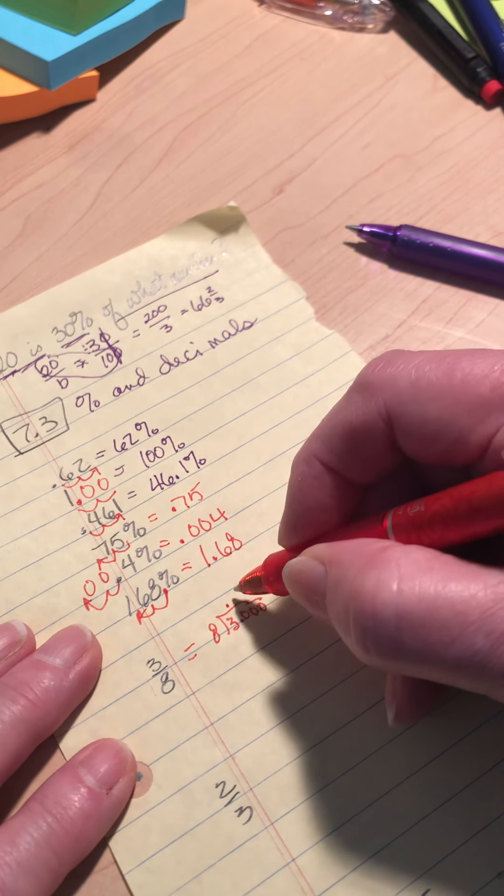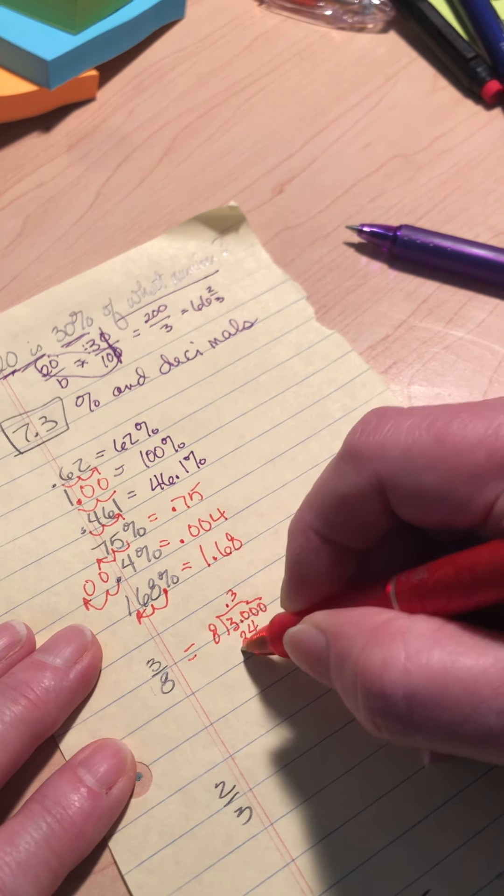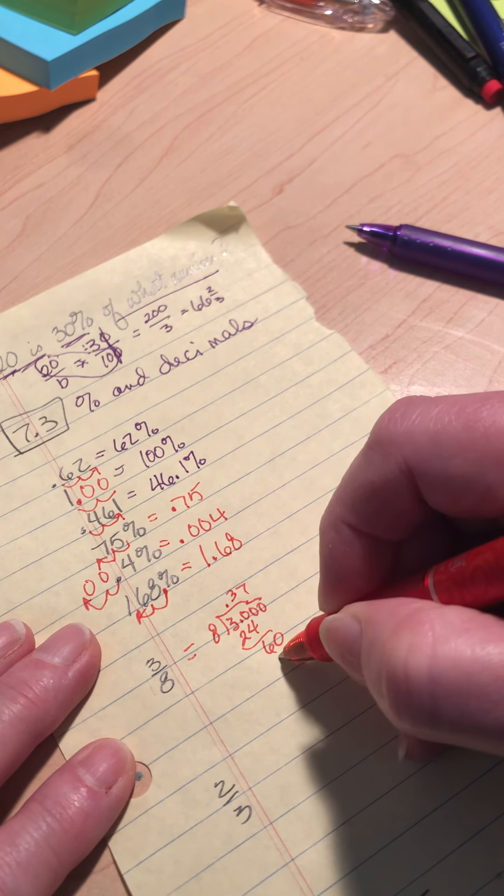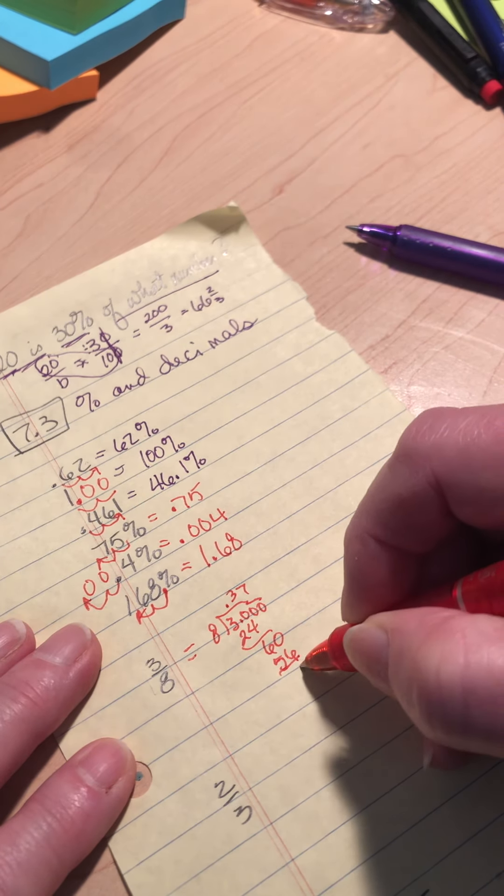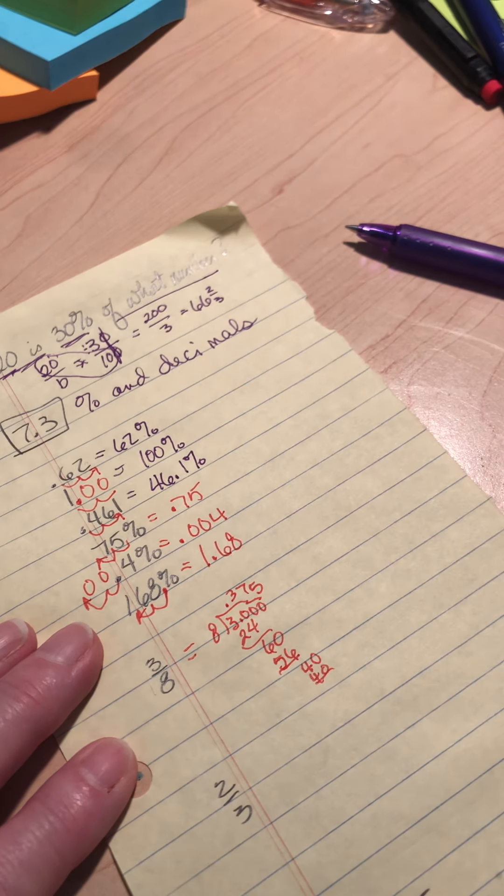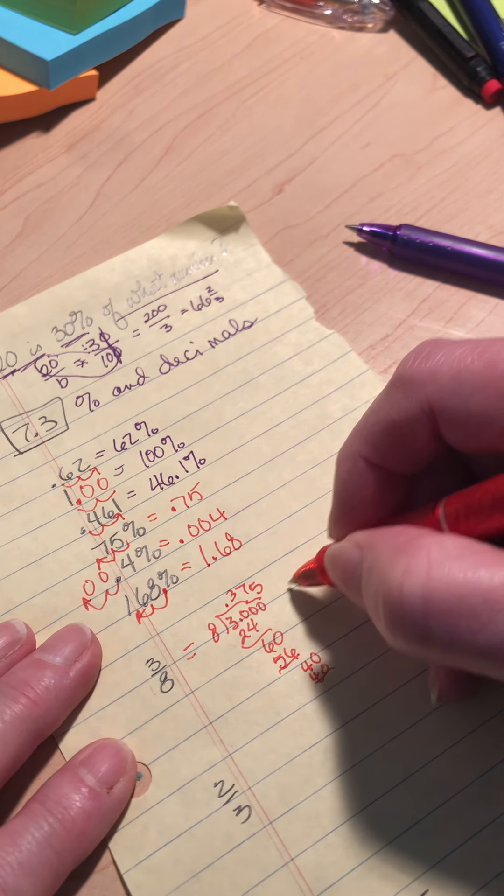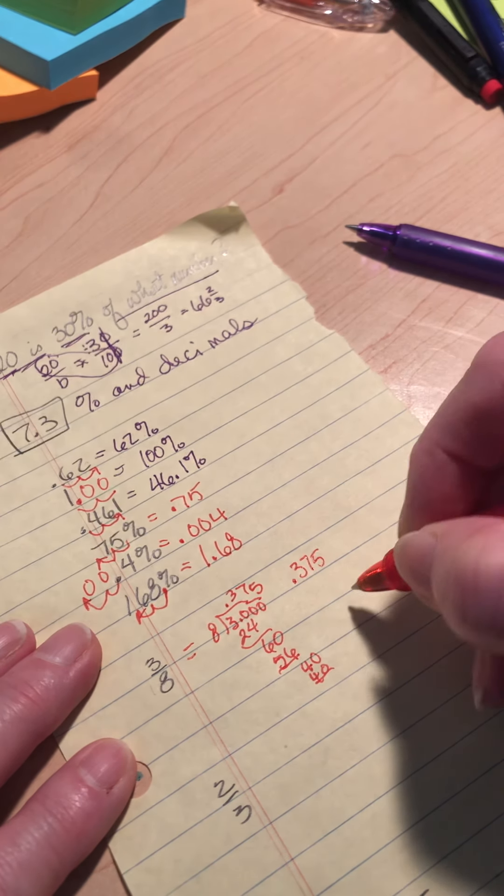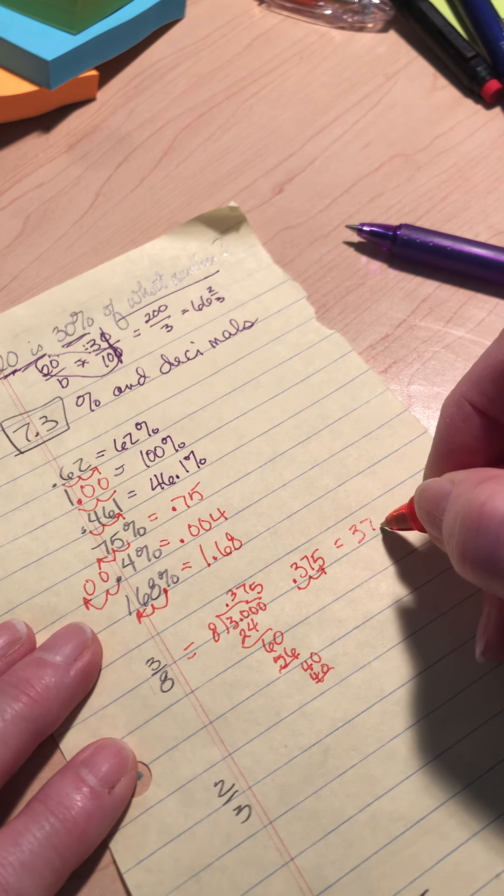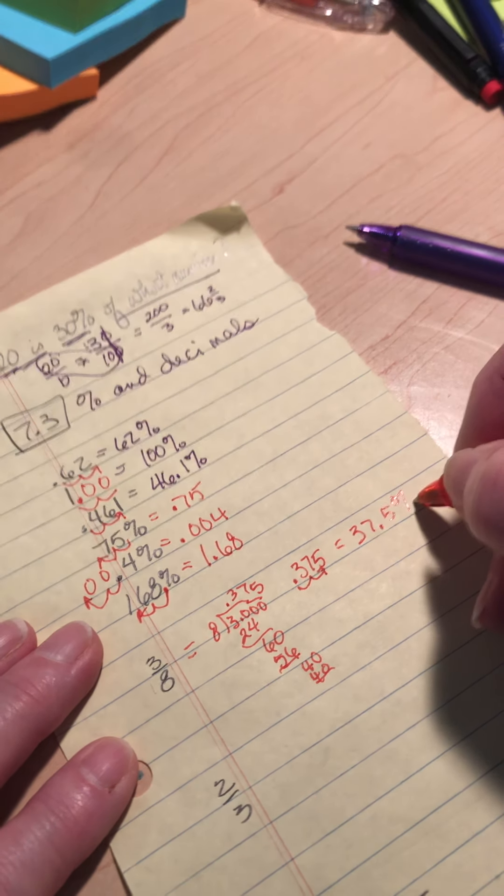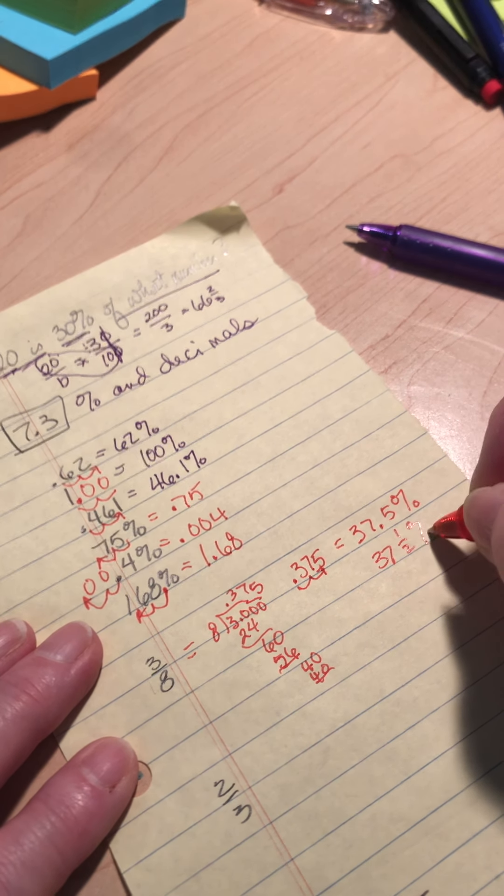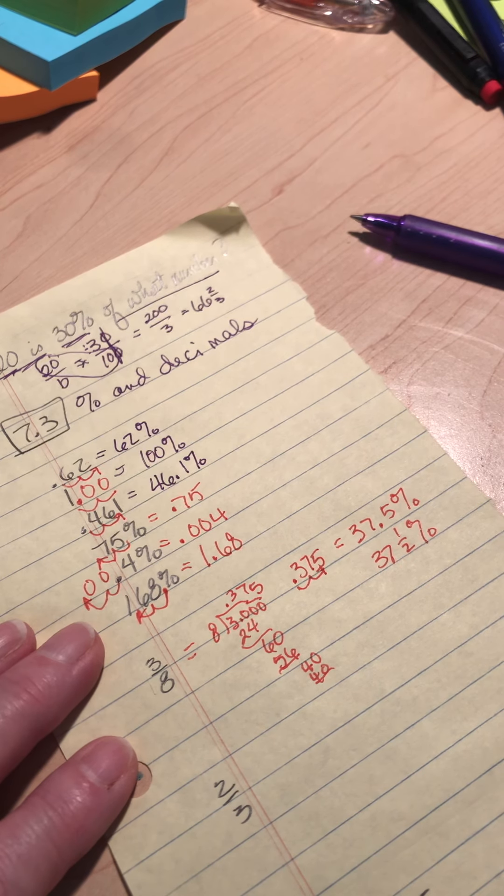So 8 goes into 3 three times, which gives me 6 left over. Bring down a 0. 7 times 56 gives me a 4 left over. And 8 goes into 4 five times. So 0.375 is my decimal. I've got to move it over two places to make it a percent. It's 37.5%. Some people like to use fractions. That's the same as 37 and a half percent. Both are valid.